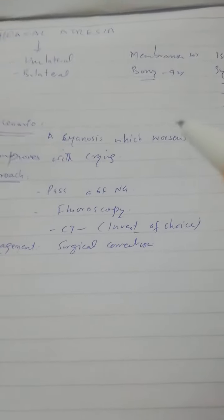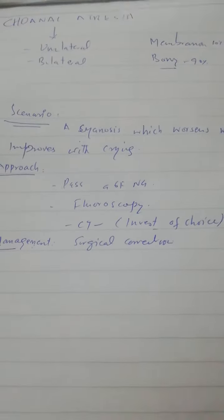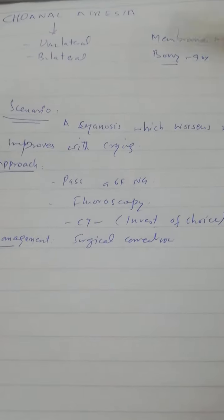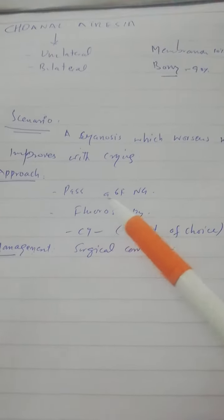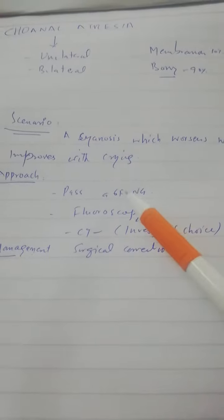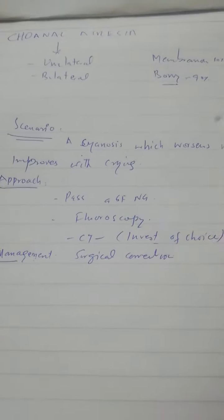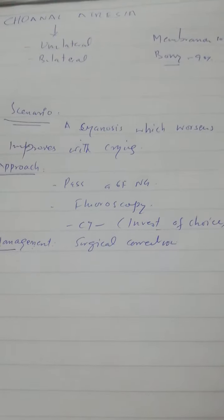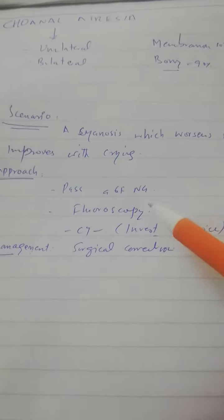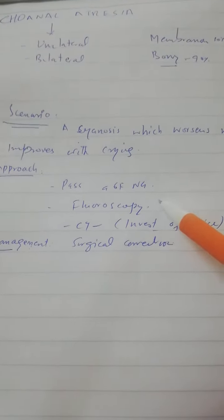Now as I told you, the cyanosis which worsens with feeding and improves with crying, you should suspect Choanal Atresia. The approach is you should try to pass an NG tube of 6 French and you will be unable to pass it. Repeated attempts should not be done because it can cause an injury.